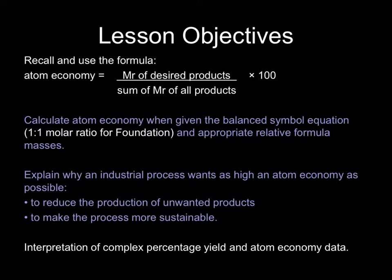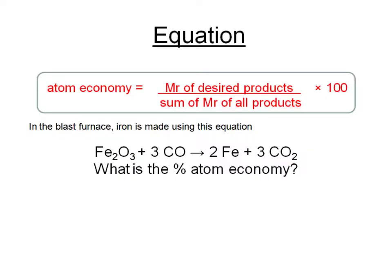To calculate the atom economy, you need to memorise this formula: atom economy is the relative formula mass of the desired product — the stuff you're trying to make — divided by the sum of the relative formula masses of all of the products, expressed as a percentage. You need to be able to calculate atom economy if given a balanced symbol equation, which means working out the relative formula masses of various products.